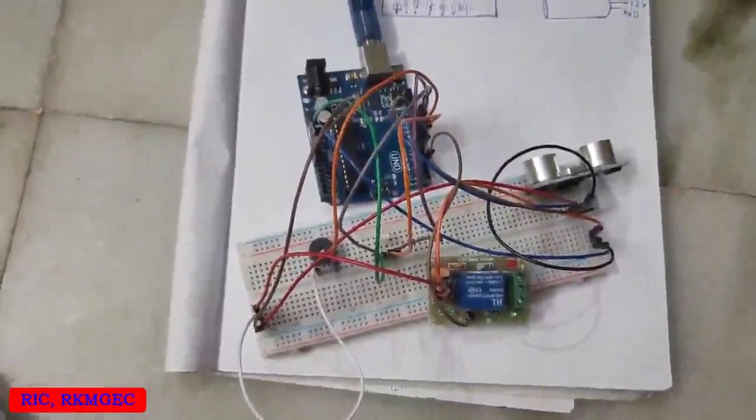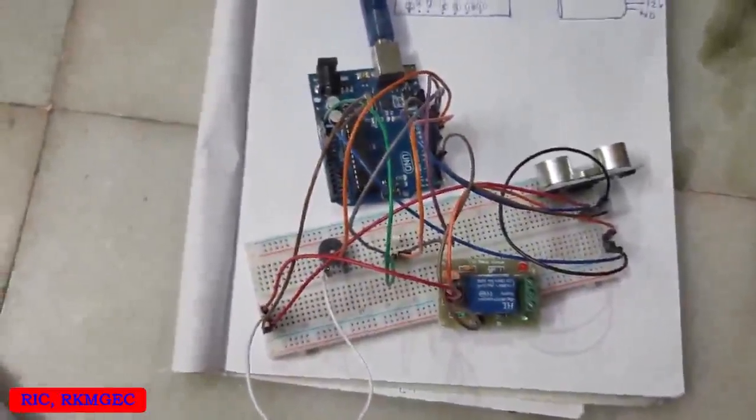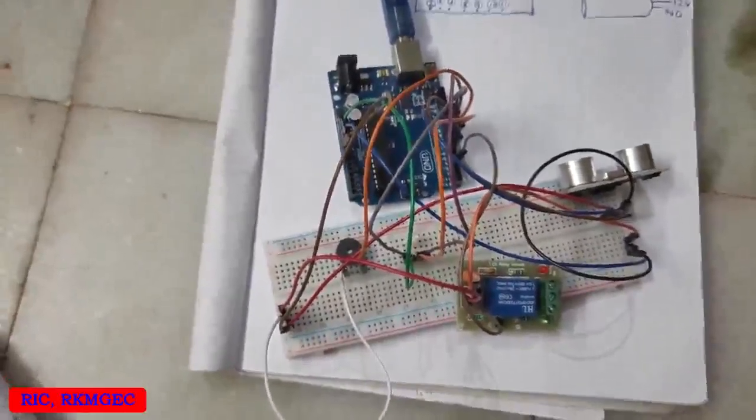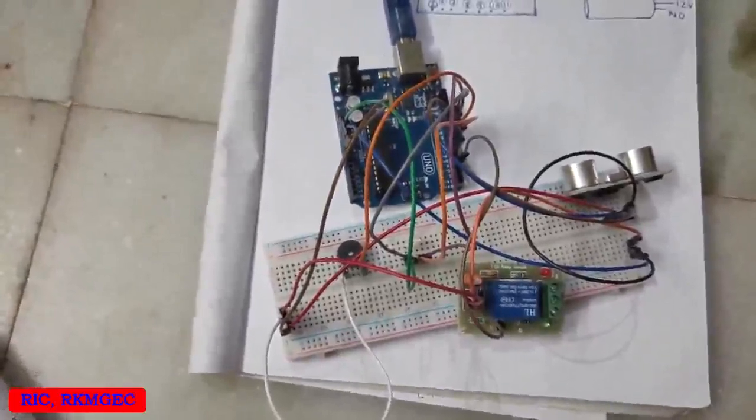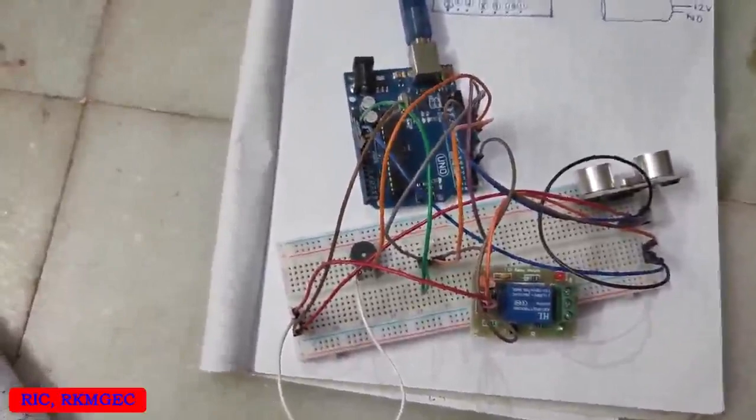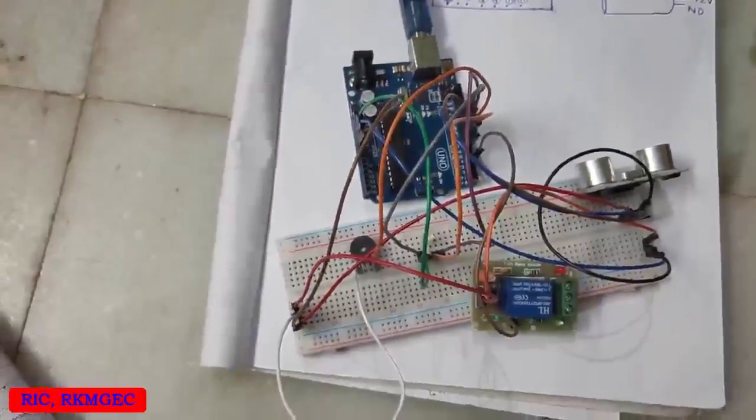The ultrasonic sound sensor detects the distance of the obstacle from the source. We have programmed it in such a way that when the distance is less than 50 centimeter, the Arduino will trigger the relay module for 10 seconds. The relay will turn on the DC pump which is used in our project.